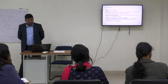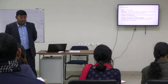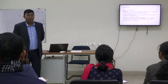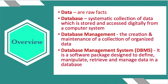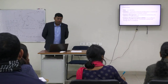Overview and a few definitions. Data is a raw fact. We know the difference between data and information — any raw fact is data, and if you process that data, it becomes information. A database is a systematic collection of data which is stored and accessed digitally or manually. Digitally means a computer system; manually means a traditional system. Our traditional file system is also a database.